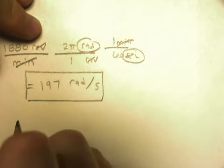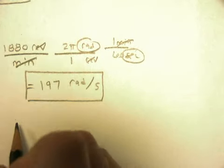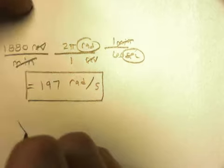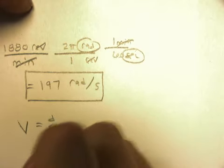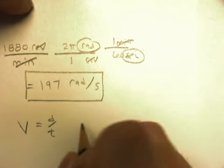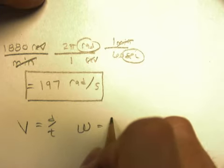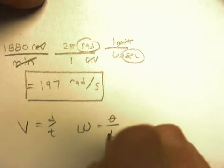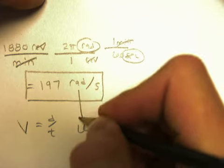So you're going to have to use this one. You'll use velocity is equal to distance over time. But we're going to actually use the other one, like angular velocity is equal to angular distance over time.